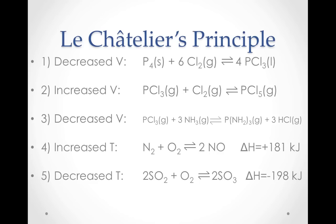Before we conclude, let's apply Le Chatelier's Principle to identify how each of these equilibria would be affected by these changes. How would decreasing the container volume for Reaction 1 affect the equilibrium position? The lower volume would increase the total pressure, shifting the equilibrium toward the side with the fewest moles of gas — that is, towards the right side, which has no moles of gas.